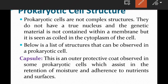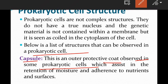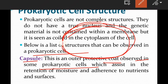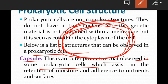Below is a list of structures observed in prokaryotic cells. The first one is the capsule — this is an outer protective coat observed in some prokaryotic cells, which assists in the retention of moisture and adherence to nutrients and surfaces. The capsule helps the cell retain water and stick to surfaces.